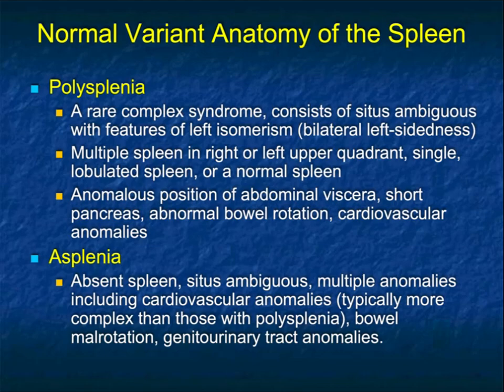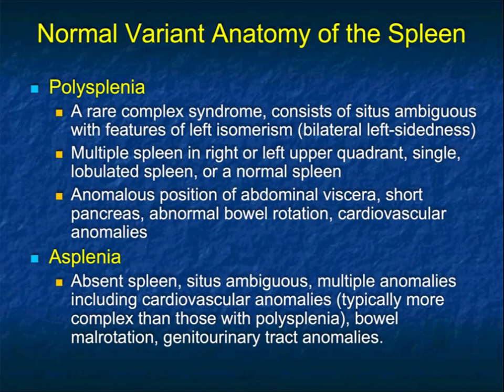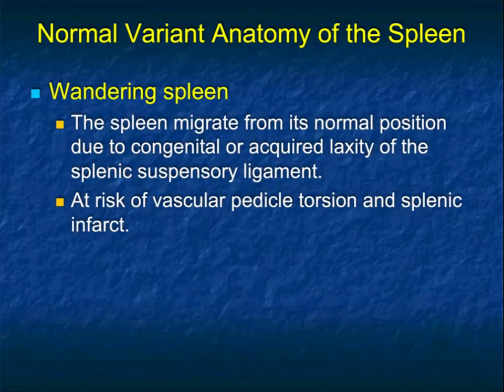Asplenia is fairly uncommon. You have an absent spleen, situs ambiguus, and multiple anomalies including cardiovascular anomalies that may be more complex than those seen in polysplenia. Bowel malrotation and geotracheal anomalies can also be seen. With both polysplenia and asplenia, it's important to think beyond just the spleen, particularly regarding cardiovascular issues. These are important diagnoses and may be the first time these possibilities are considered.